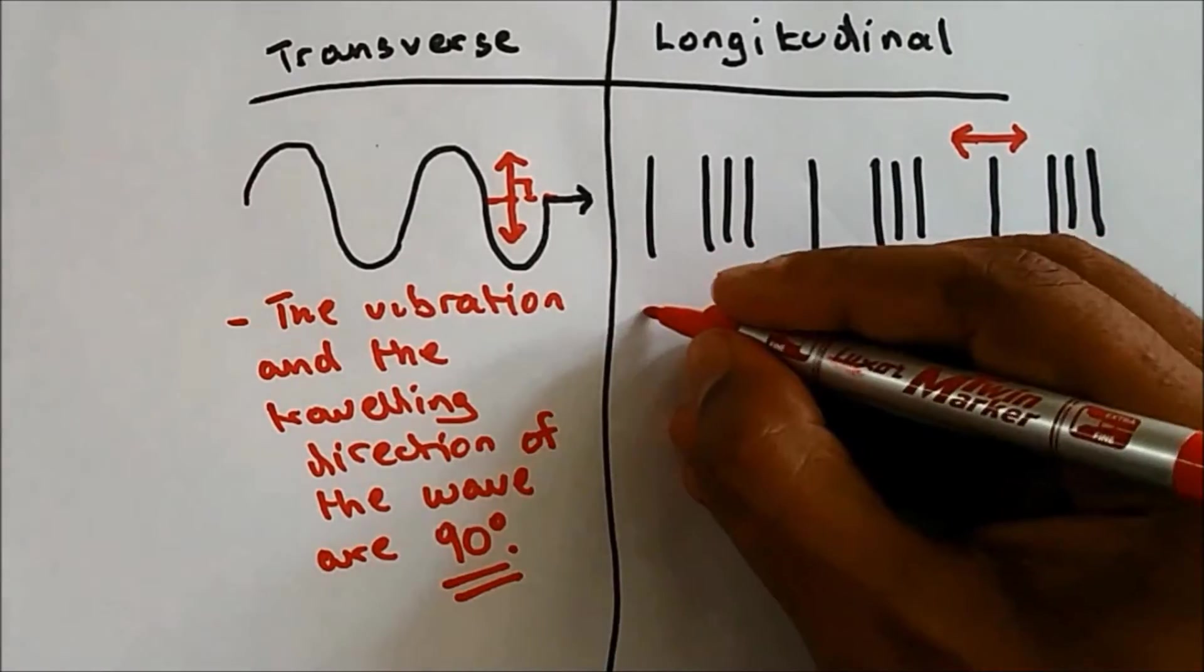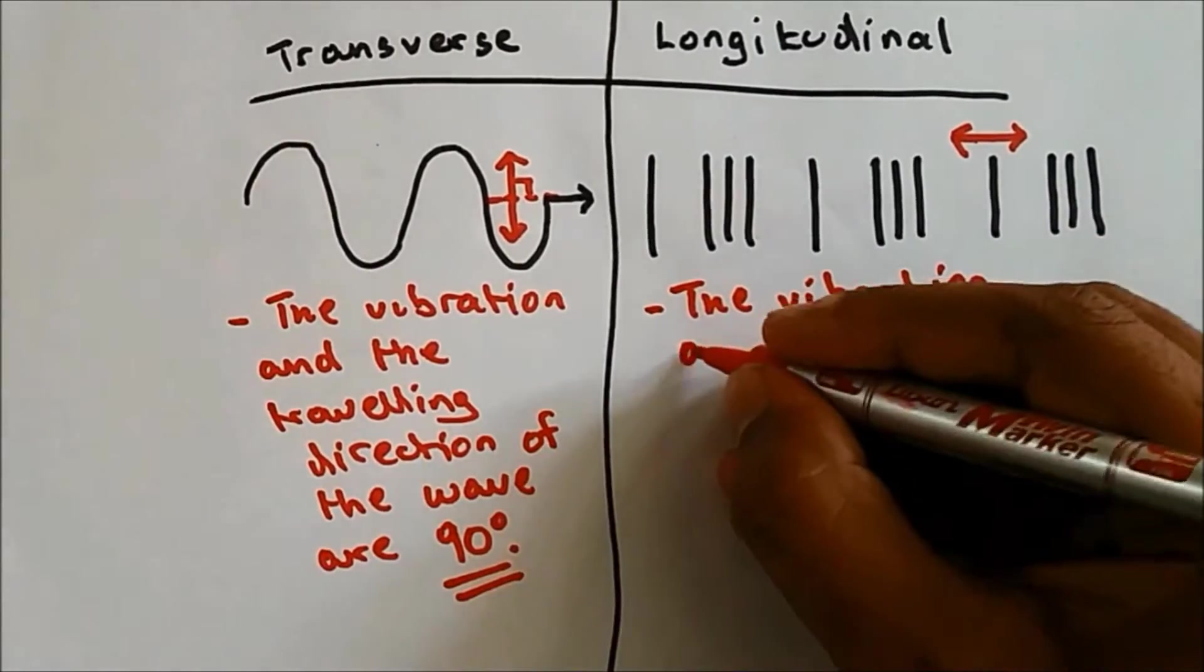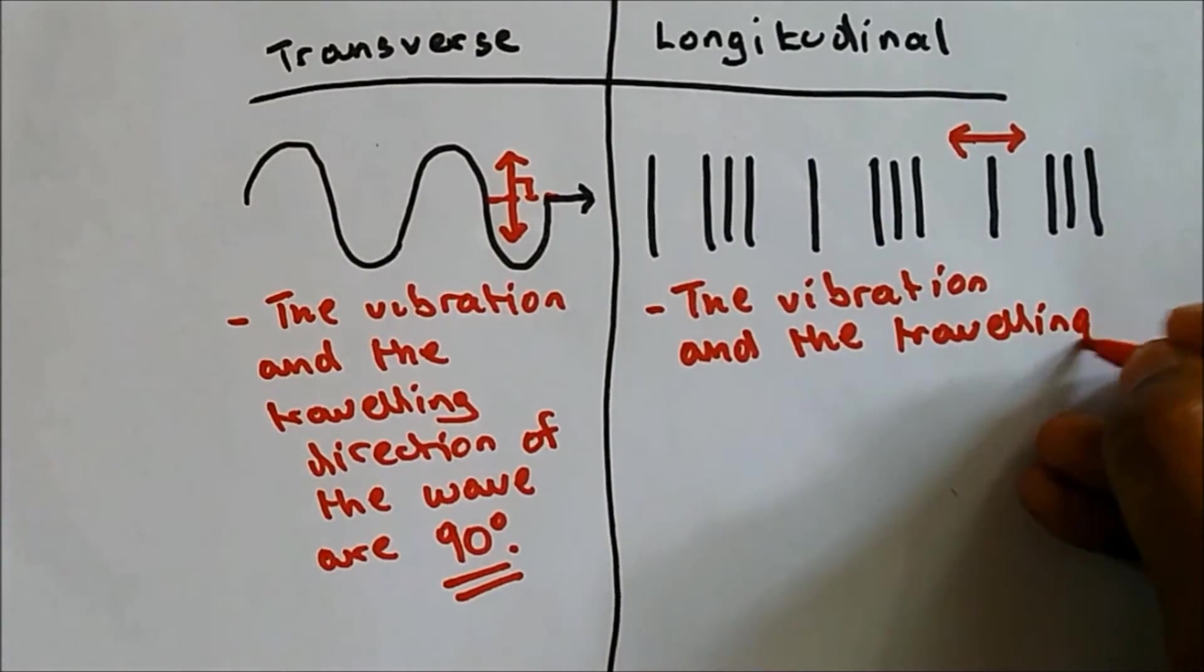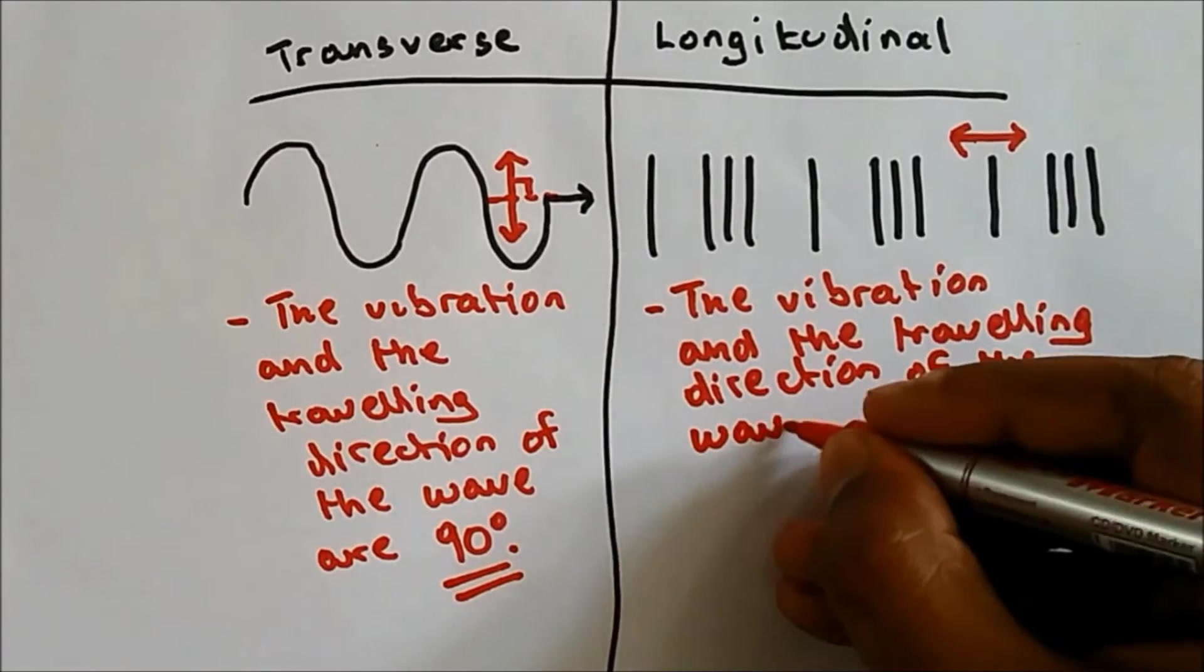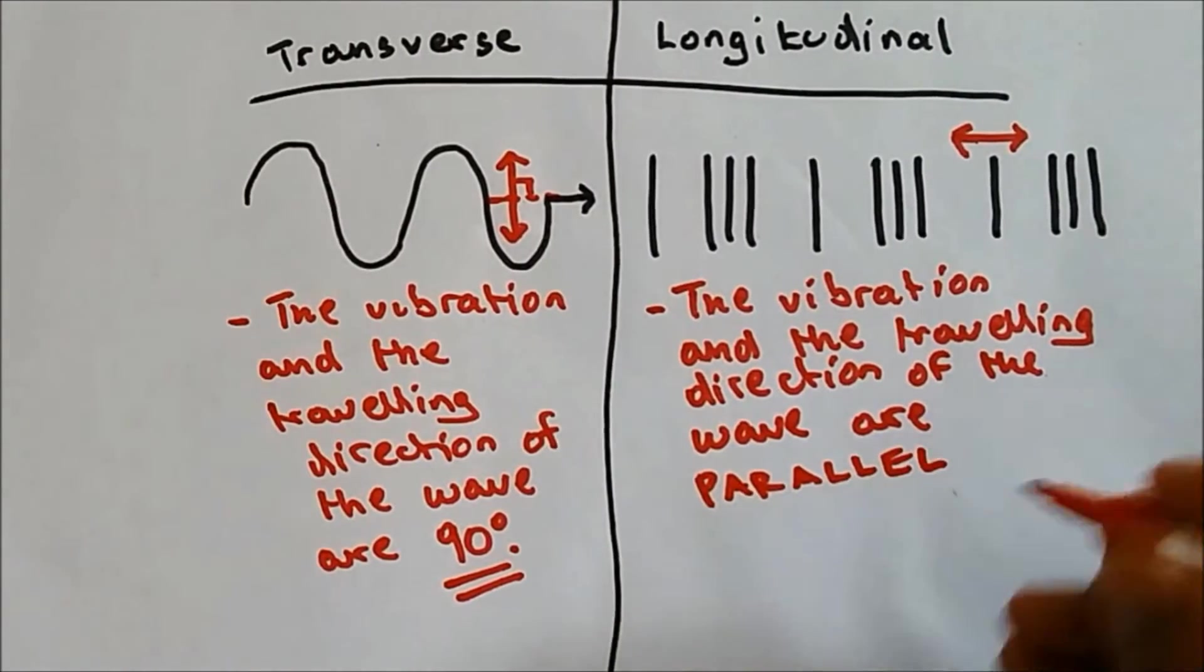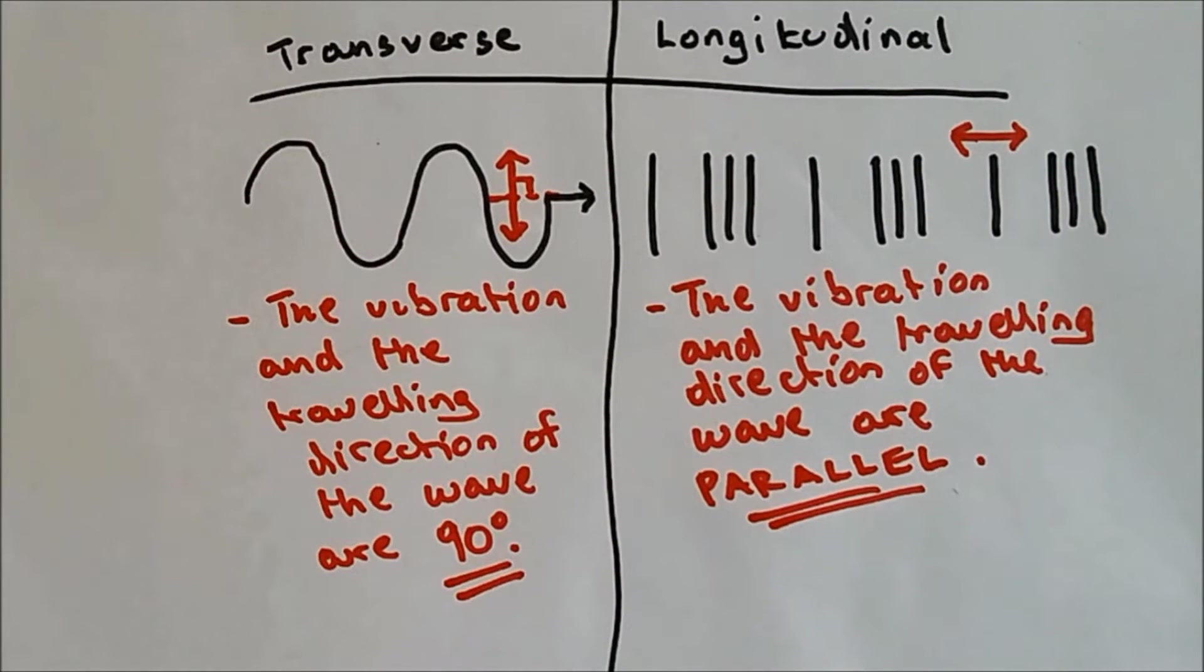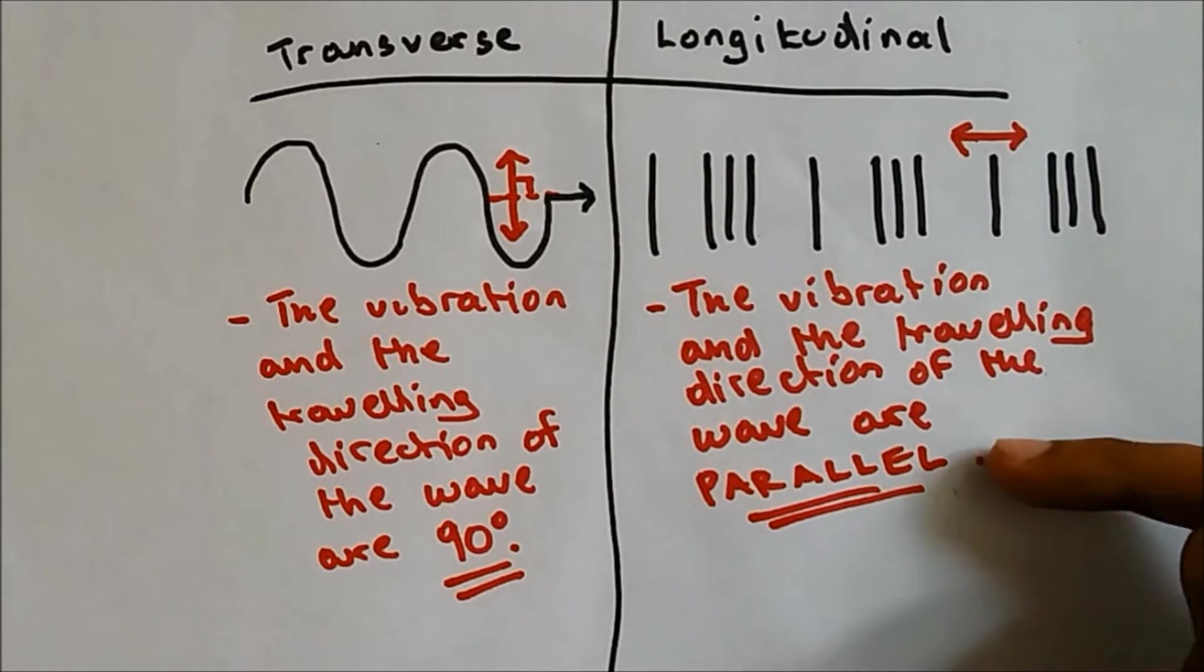So the definition is the vibration and the traveling direction of the wave are parallel. So the vibration is 90 degrees, whereas the longitudinal is parallel.